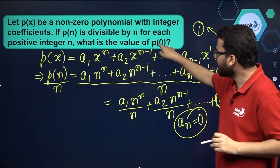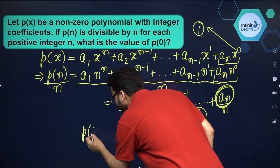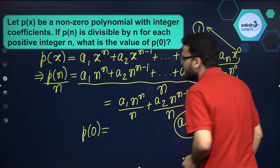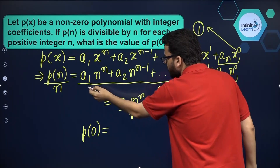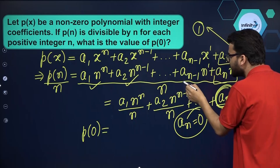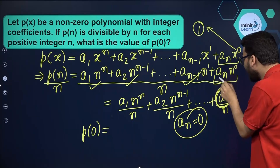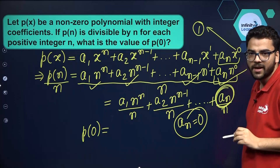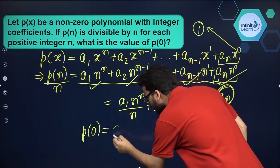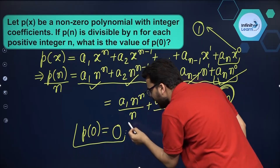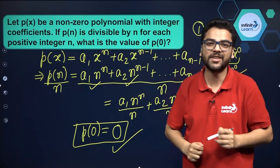Now we have to find the value of P of 0, and it has become very simple. Just put 0 in place of x: every term with x will become 0, and aₙ we have already proved to be equal to 0. So this whole thing becomes equal to 0 only. That means P of 0 is 0.